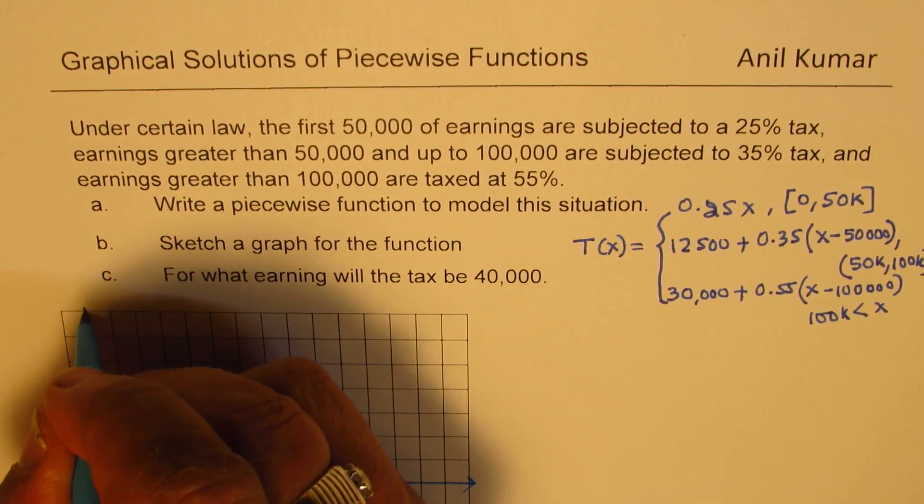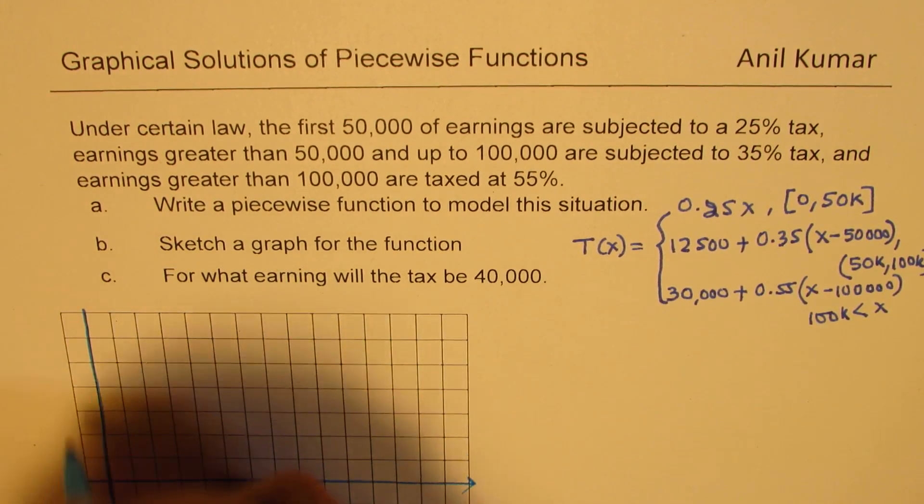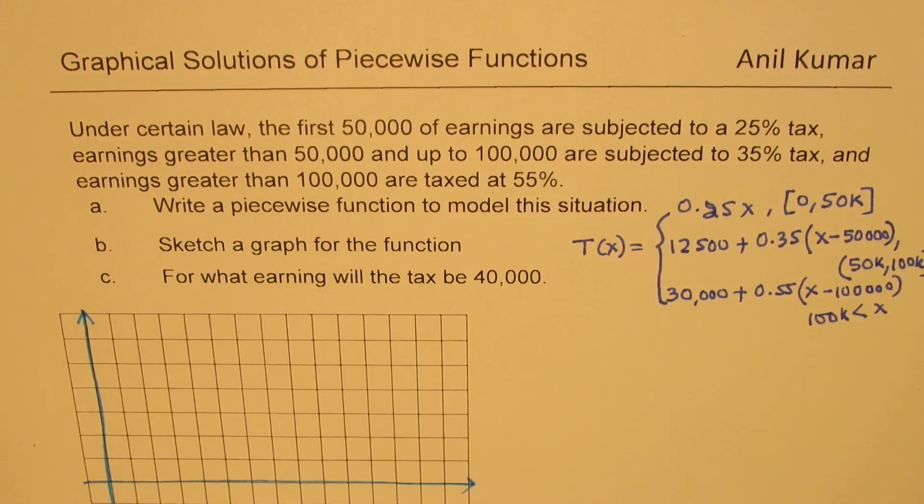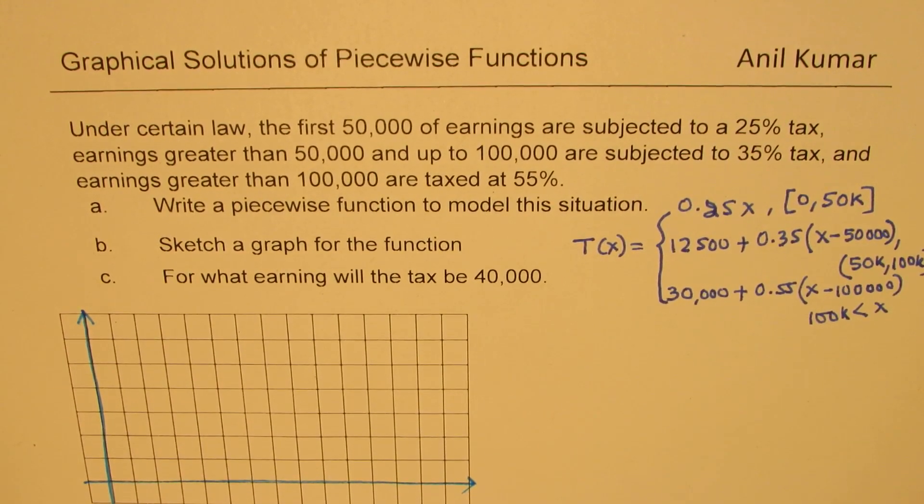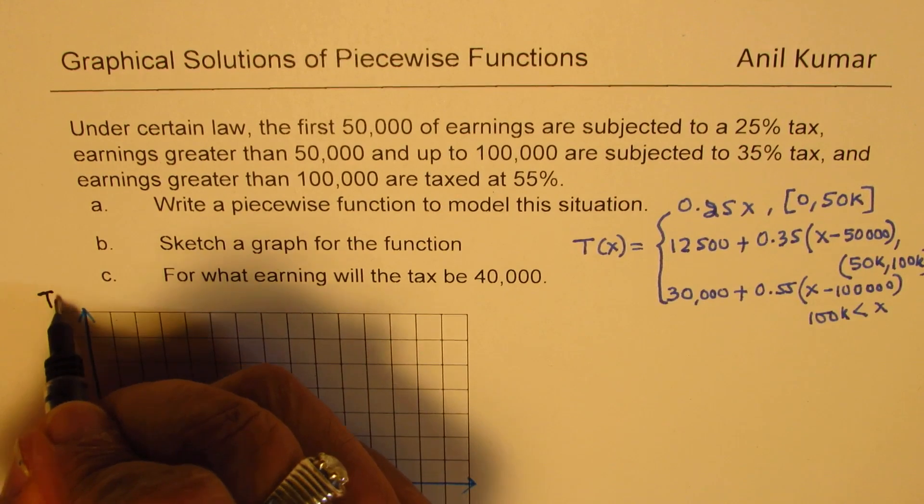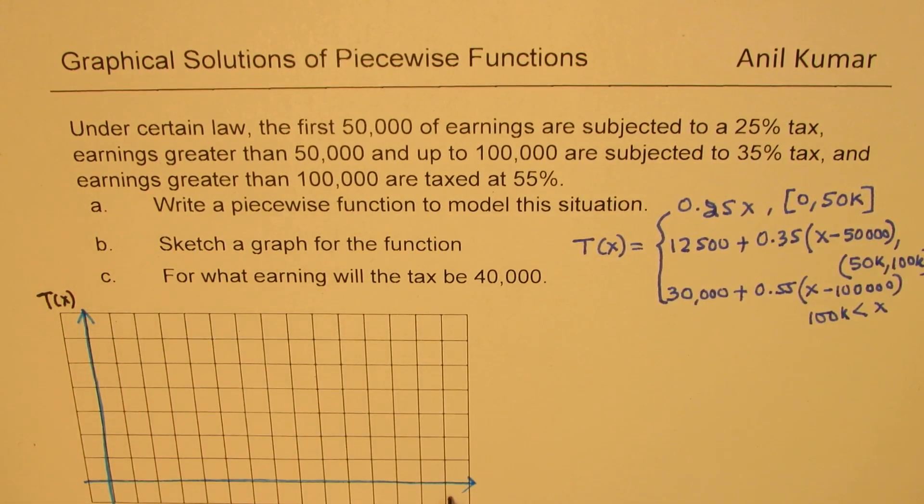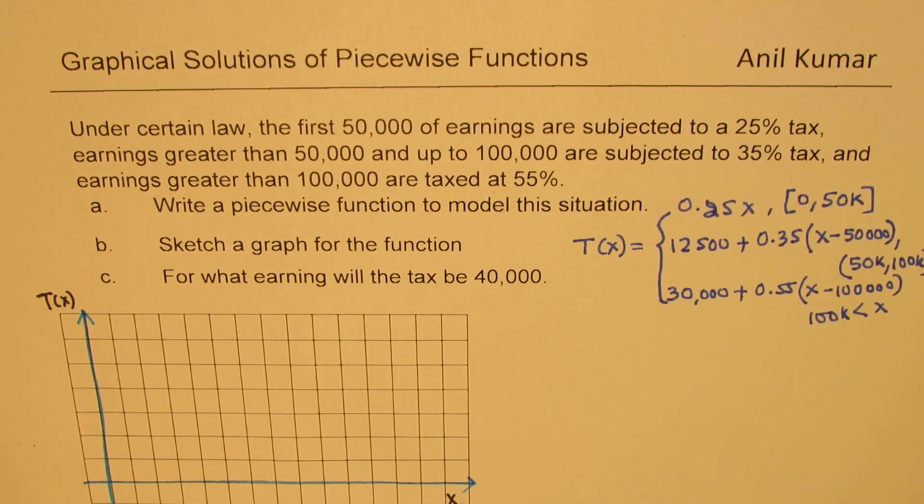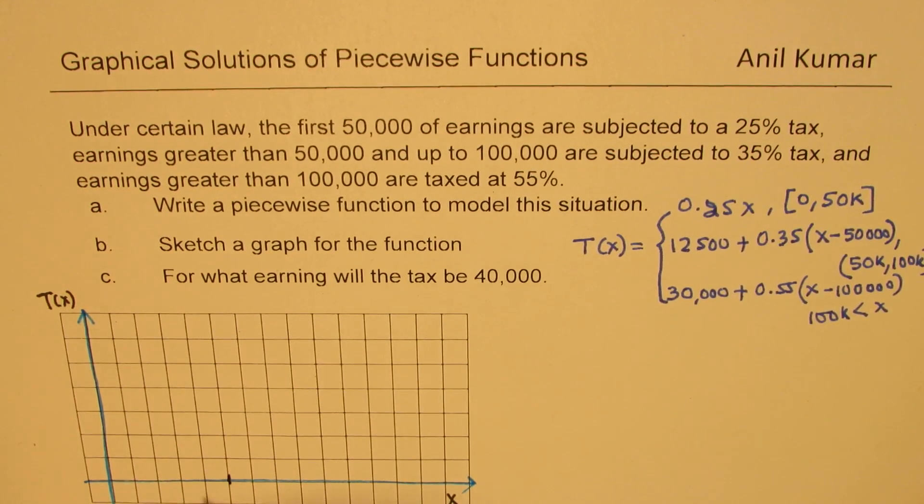Let me sketch the earnings along the horizontal direction. And on the vertical, we'll sketch the tax. So that is the tax, and this is the earnings, E. So that is 50,000, E, X in dollars, or whatever units you choose.